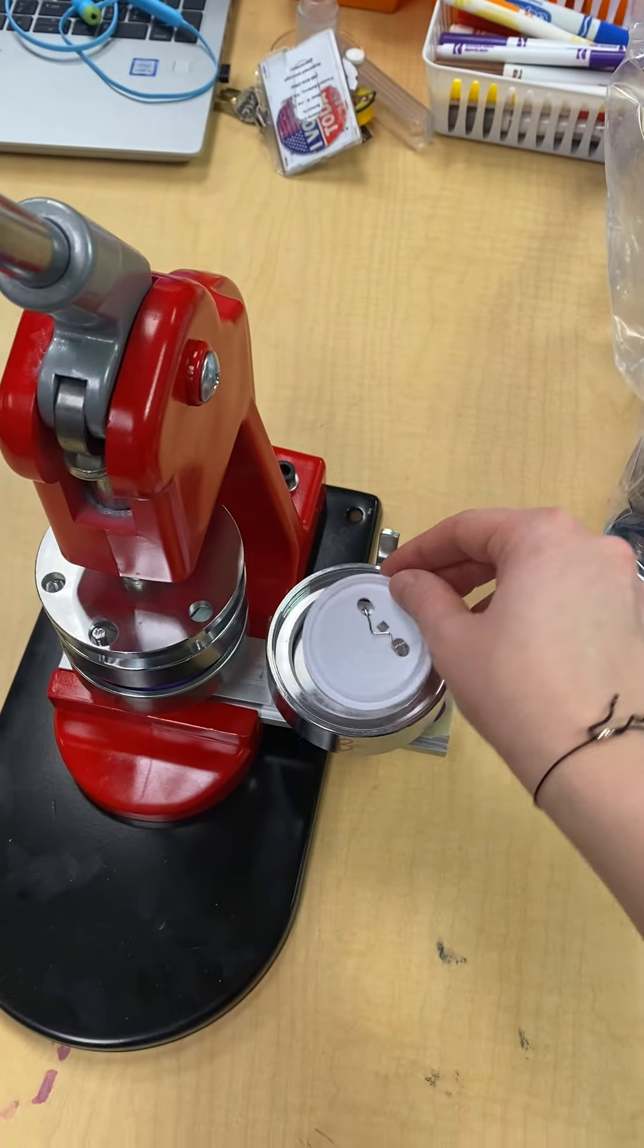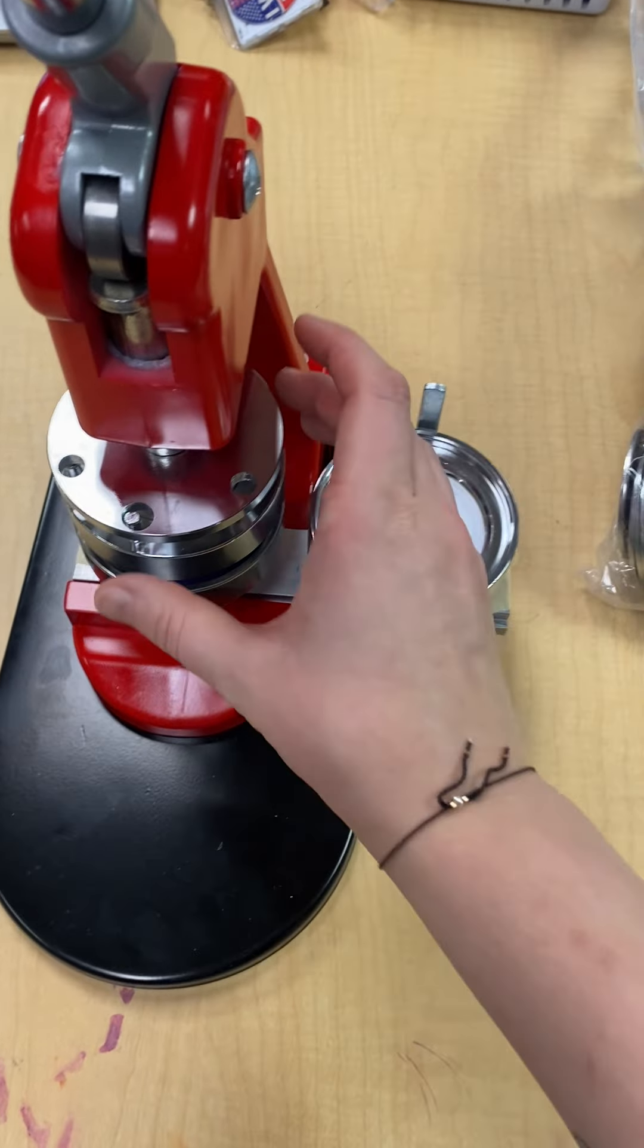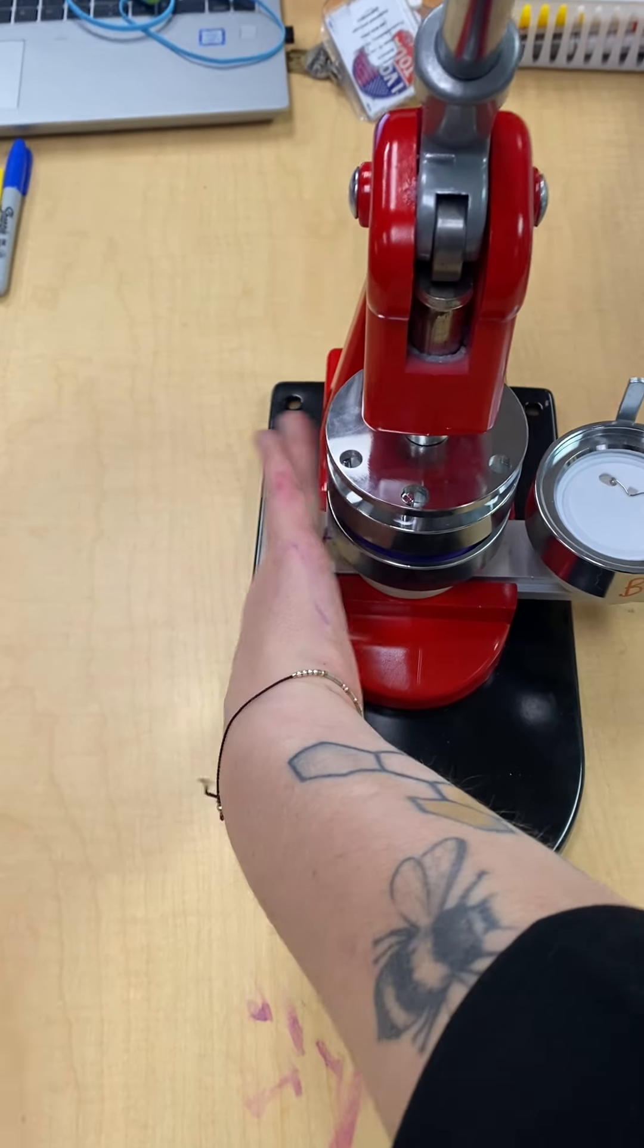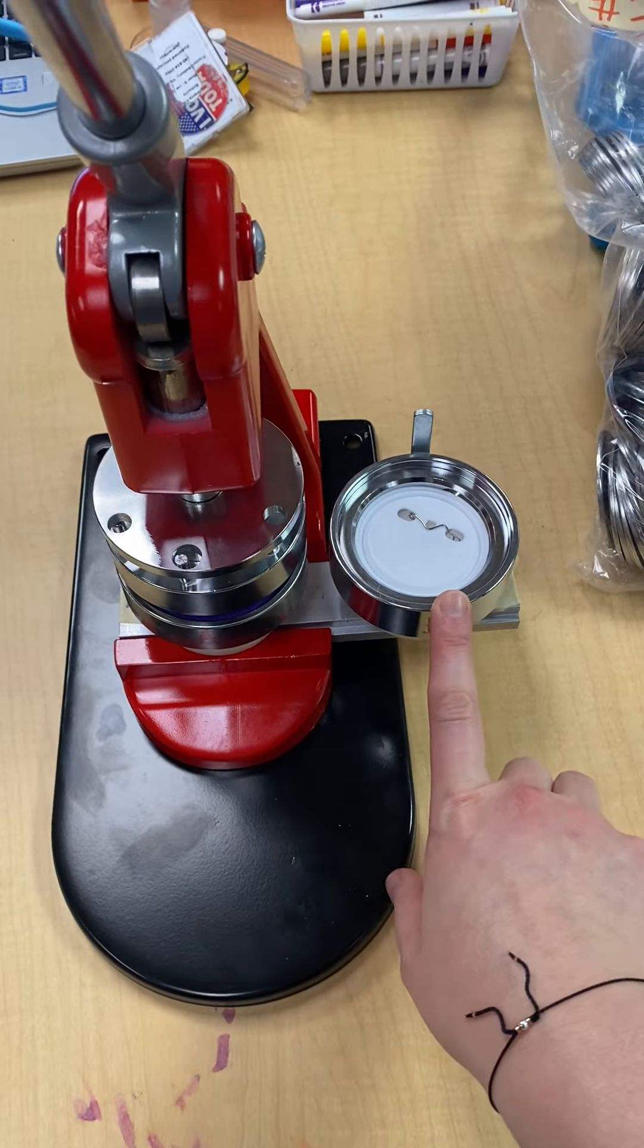So the backing is gonna go pretty much upside down. Where it kind of dips in here is gonna face down. You can see the little zigzag, so you know it's in the right direction.